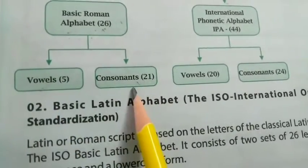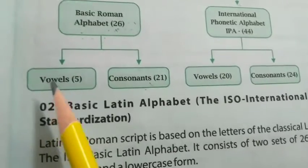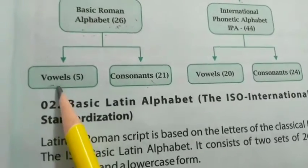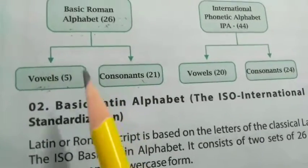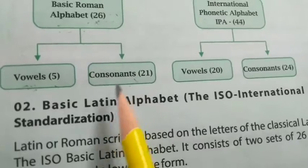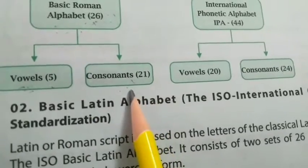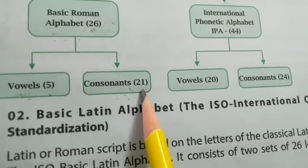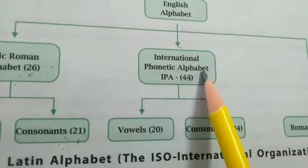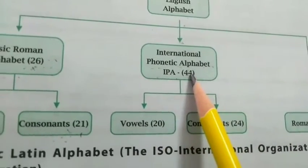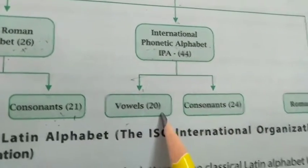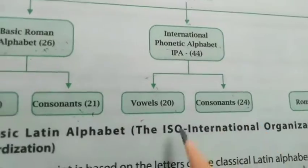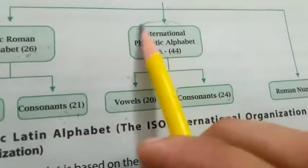The basic Roman alphabet letters are further classified into two categories: vowels and consonants. We have five vowels — A, E, I, O, U — and apart from these, the rest of the letters in our alphabet are consonants, so we have 21 consonants. Then the international phonetic alphabet, which is IPA, has 44 sounds in total — vowels are 20 and consonants are 24.